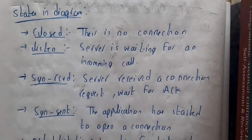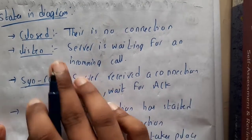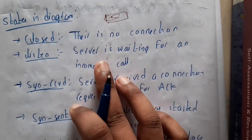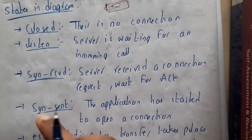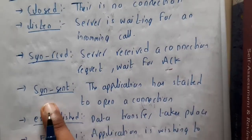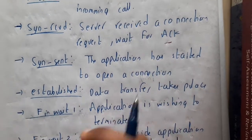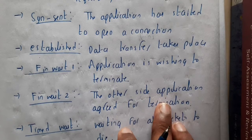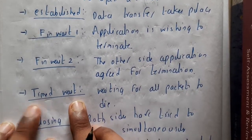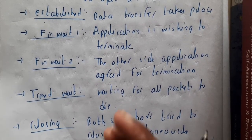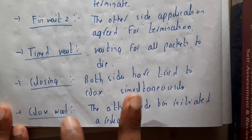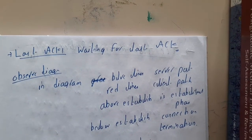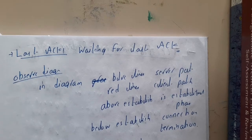Now the state definitions: CLOSED — no connection. LISTEN — server is waiting for an incoming call. SYN RECEIVED — server received a connection request. SYN SENT — the application is sending. ESTABLISHED — the connection has been established. FIN WAIT — application is waiting to terminate but waiting for response. FIN WAIT 2 — the other side agreed but still waiting for acknowledgement. TIMED WAIT — waiting for the packet to die and reset. CLOSING — both sides tried to close simultaneously. CLOSE WAIT — the other side is initiating a release. LAST ACK — waiting for the last acknowledgement.